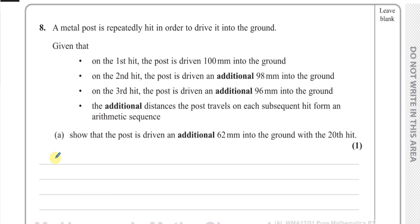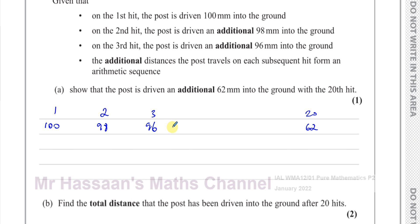So we have the first term at 100 millimeters, the second term at 98 millimeters, and the third term at 96 millimeters. We need to show that the 20th term is going to be 62 millimeters. Since this is an arithmetic sequence, we have a common difference. The first term is 100, and the common difference is negative 2.